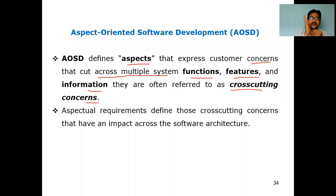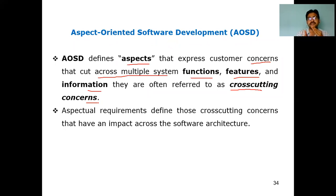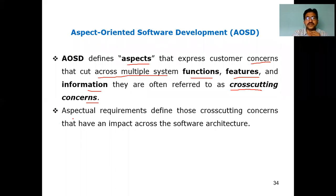Cross-cutting concerns means a requirement is divided — cut into functions separately, features separately, and information separately. Cutting the customer concerns in this way is called cross-cutting concerns. Cross-cutting means optimizing, giving in the right way, giving more benefit — that is what cross-cutting concerns refers to.